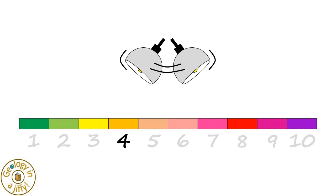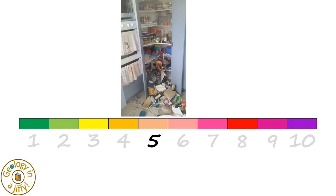Magnitude 4 earthquakes are comparable to the vibrations of a passing truck. Magnitude 5 earthquakes cause furniture to move, chunks of plaster may fall from walls, and the contents of cupboards will fall off shelves.